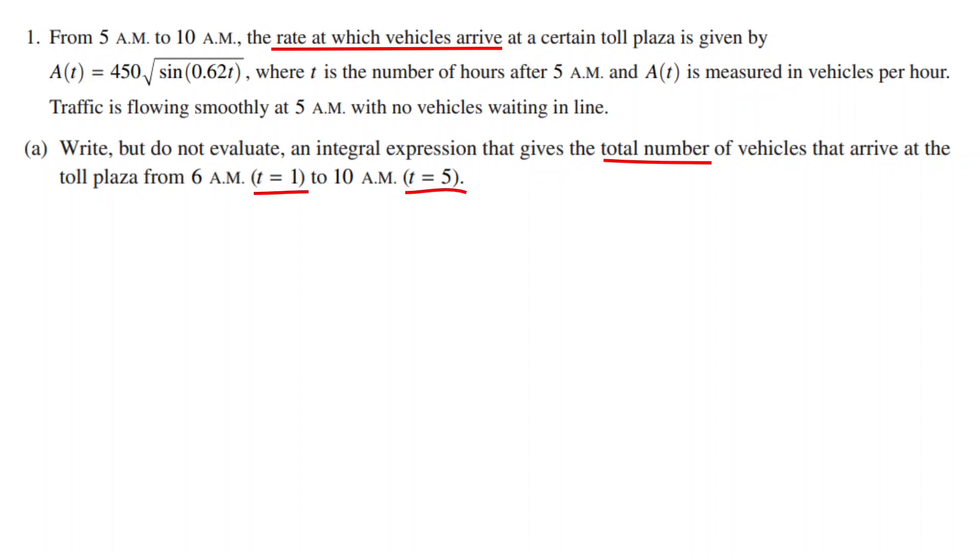To find the total number of vehicles that arrive at the toll plaza, all we need to do is integrate the rate at which vehicles arrive. We are also given the bounds t equals 1 to t equals 5, so our answer would be an integral from 1 to 5 of A(t) dt.